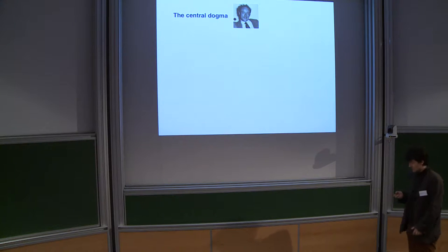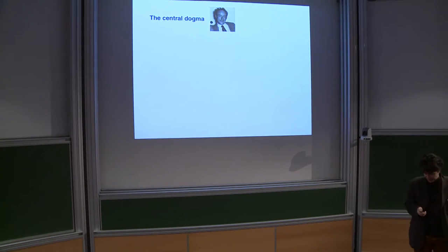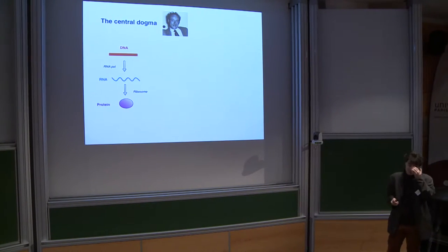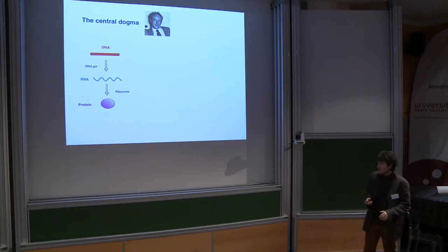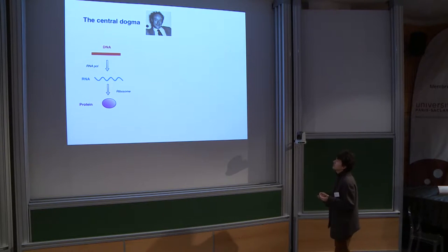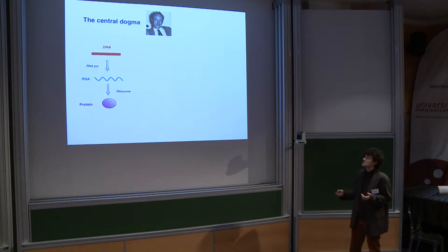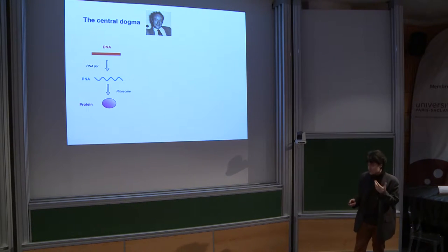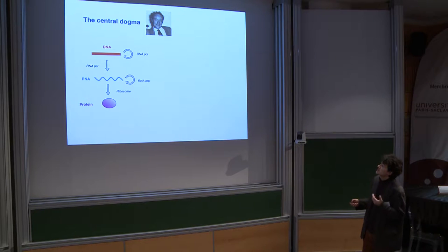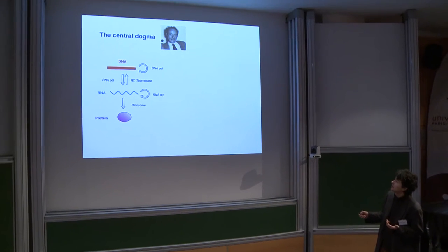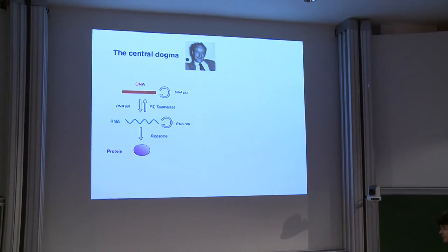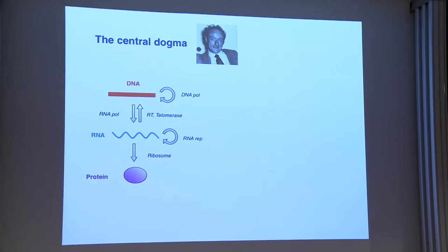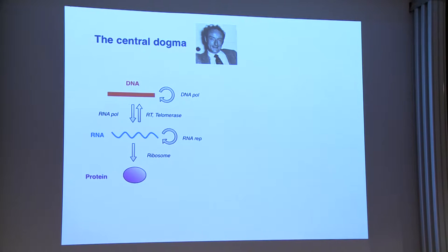I'd like to start with the central dogma introduced by Francis Crick in the 1970s. This was formulated to illustrate the belief at the time that information flow in biological systems is unidirectional from DNA into RNA and then into proteins. Later, it turned out that this is only partially true — at least between RNA and DNA, the information flow can be reversed by the actions of reverse transcriptases and in a limited way by telomerase as well.